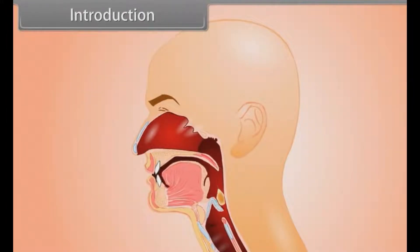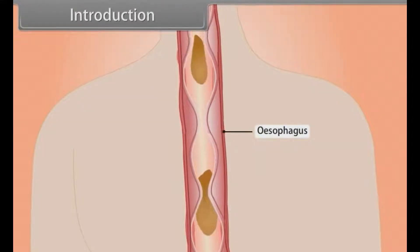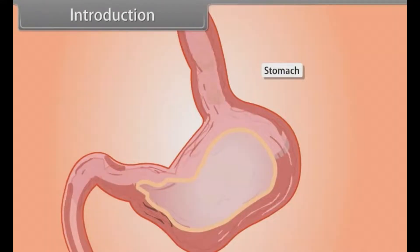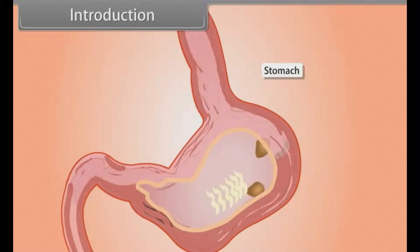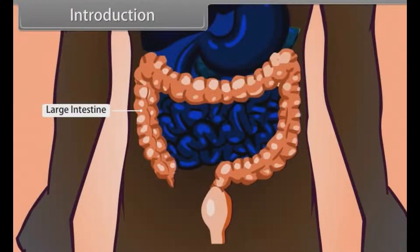Through mouth and then through esophagus, food goes to stomach where digestion of protein starts and then food enters into the small intestine from where the undigested food goes to large intestine and then eject out from the body through anus.